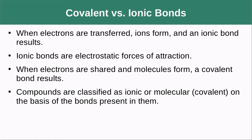Covalent versus ionic bonds: when electrons are transferred, ions form and an ionic bond results. These are electrostatic forces — pretty powerful bonds that hold the atoms together. When electrons are shared between two atoms, a covalent bond results. We classify compounds according to whether they have an ionic or a molecular bond.